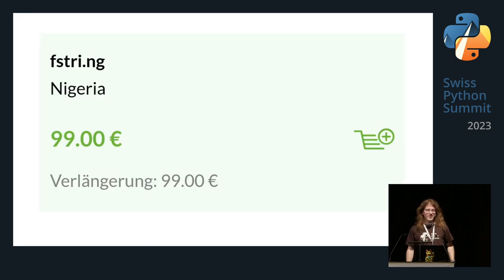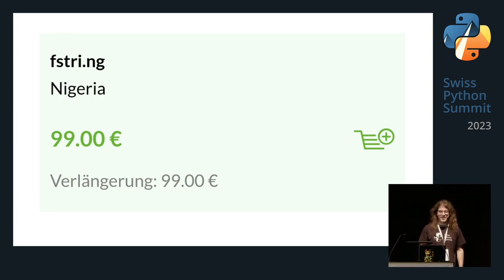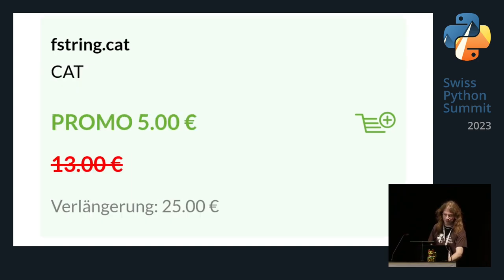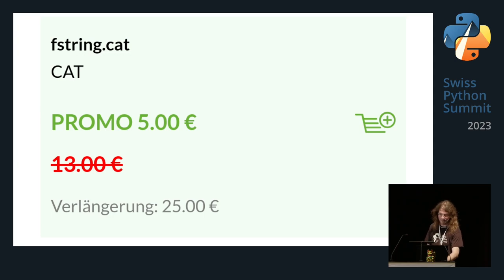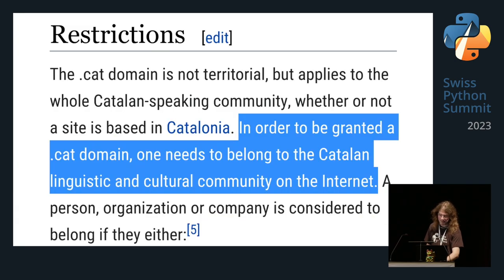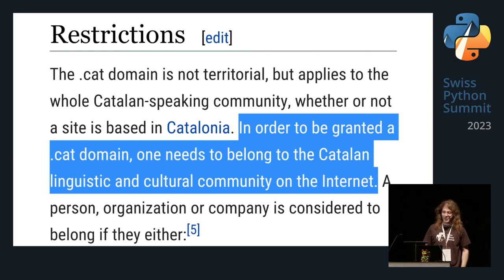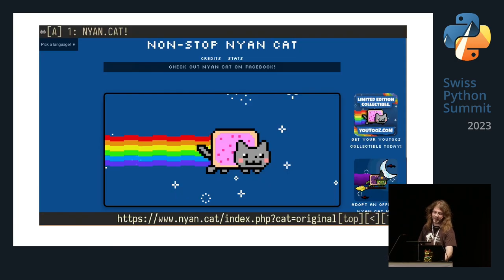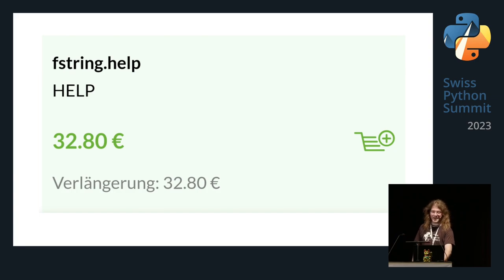So I needed to think of something new. I thought fstring.cat would be cool, but 100 euros per year is a little much for the joke. And .cat is apparently reserved for websites belonging to the Catalan linguistic and cultural community on the internet — like neon.cat, obviously. So I ended up getting fstring.help.